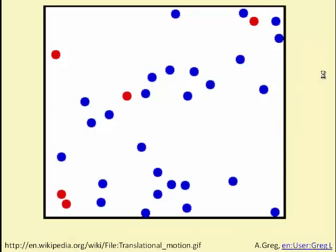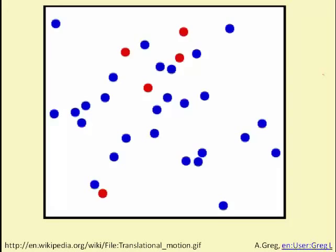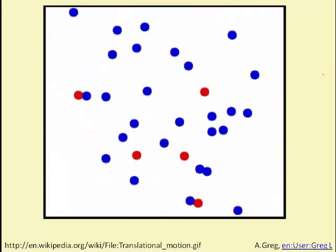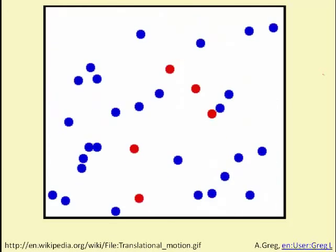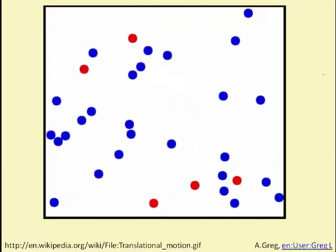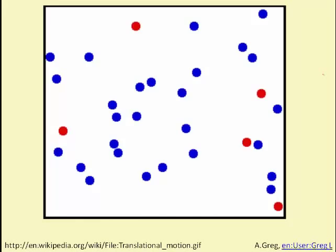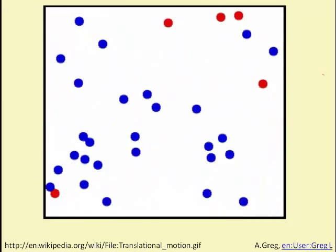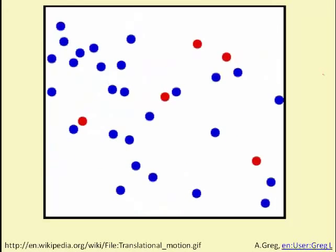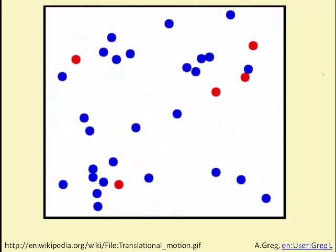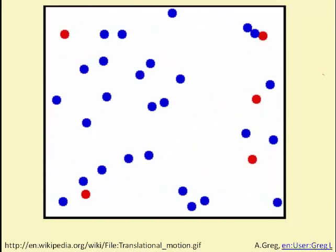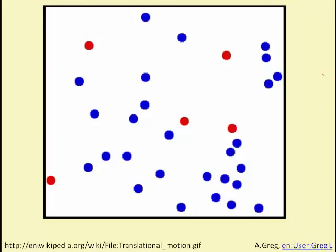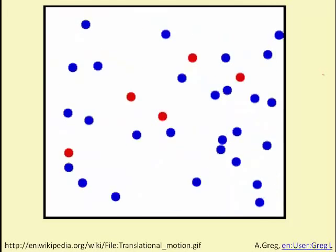Some features of diffusion are that it occurs until dynamic equilibrium is reached, until you have a homogeneous solution. It's not affected by the gradients of other substances. In this animation, you can see that the red and the blue particles are spreading out randomly, and how far apart the red particles end up is not affected by how far apart the blue particles spread out. They're each following their own concentration gradient.